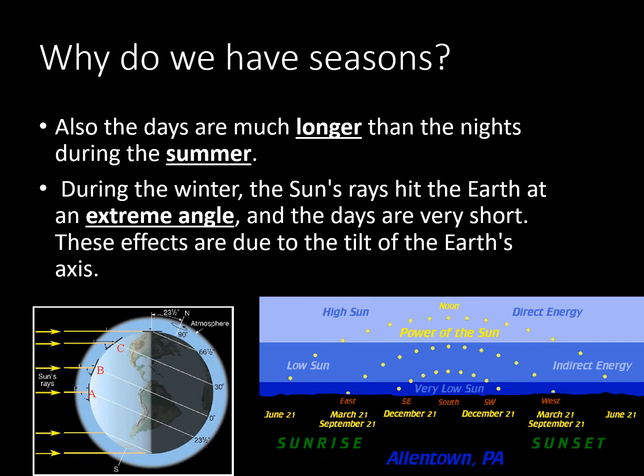The days are much longer than the nights during the summer. During winter, the sun's rays hit the earth at an extreme angle and the days are very short. These effects are due to the tilt of the earth's axis.